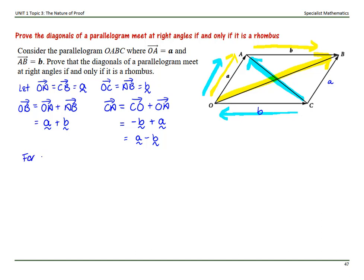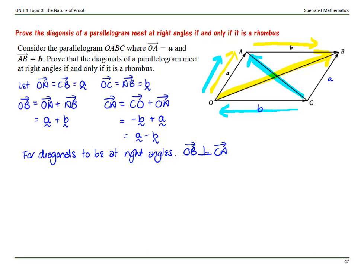Now for the diagonals to be at right angles, we need to show that OB is perpendicular to CA. We need to show that the dot product of OB and CA equals zero. The dot product of our two vectors needs to equal zero, because cos 90 needs to be zero — the angle between those two diagonals needs to be a 90 degree angle.